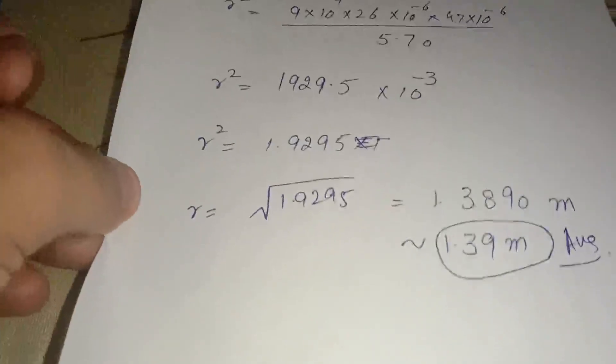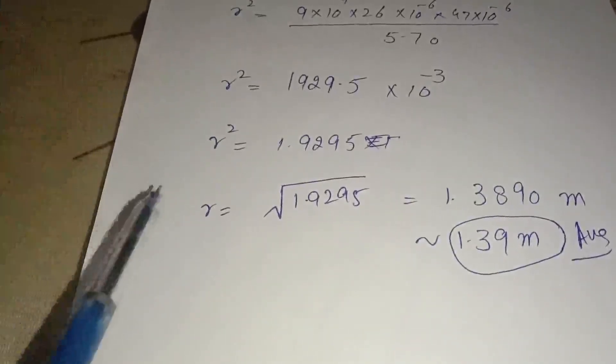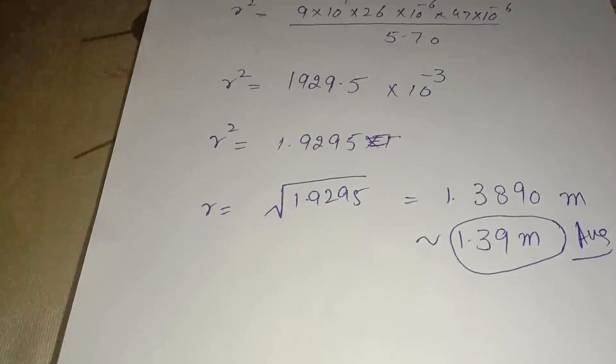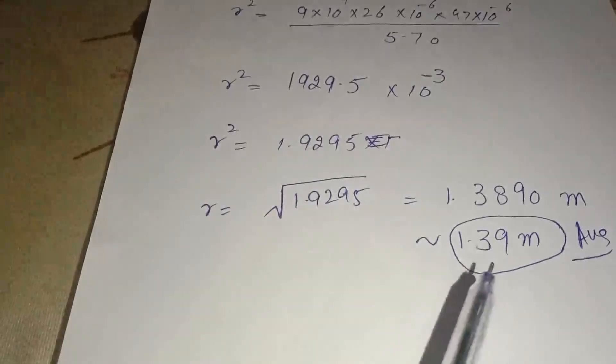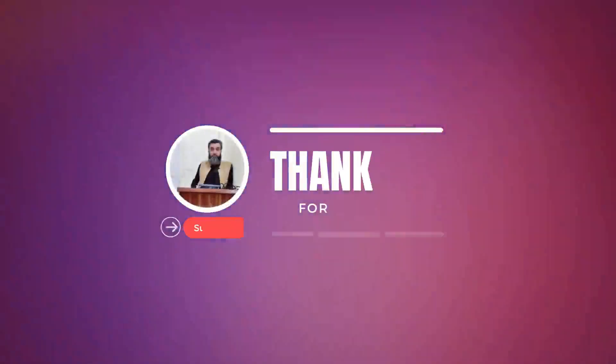This is the answer given in the book. The distance between the charges to have a force of 5.70 Newtons is 1.39 meters. This completes our question number two.